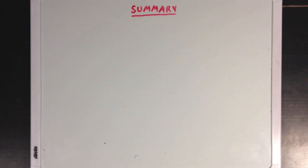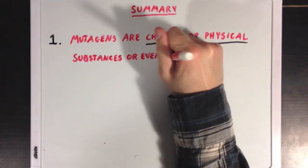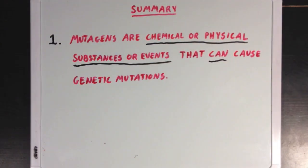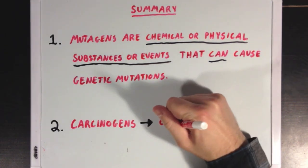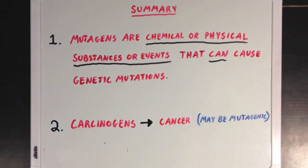So what did we learn? First, mutagens are chemical or physical substances or events that can increase the probability of genetic mutations occurring. And carcinogens are things that lead to cancer — while they can be mutagenic as well, they aren't necessarily mutagenic.